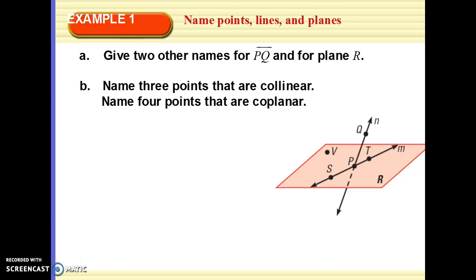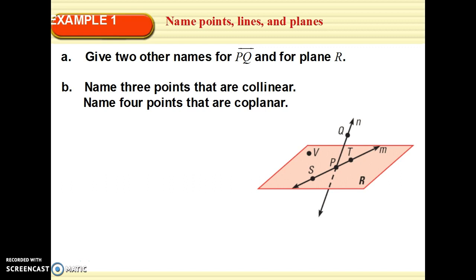Give two other names for line PQ and for plane R. This actually should look like this. It's just hard to see those arrows. So, this is line PQ. How else could I name line PQ? Line N. You can call it line N because this little italicized N is another way of naming it. There is one more way to name this line. Instead of line PQ, we can name it line QP. Line QP is the same thing as line PQ.